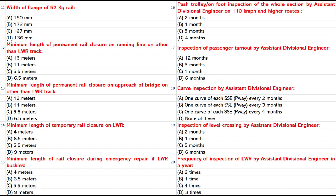Curve Inspection by Assistant Divisional Engineer: A. 1 curve of each SSE P-Way every 2 months. B. 1 curve of each SSE P-Way every 3 months. C. 1 curve of each SSE P-Way every 4 months. D. None of these. Answer: D. None of these.